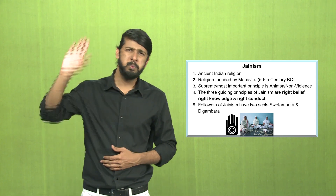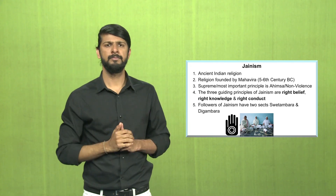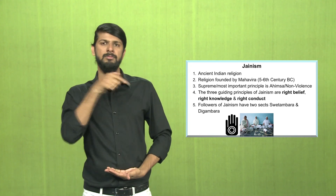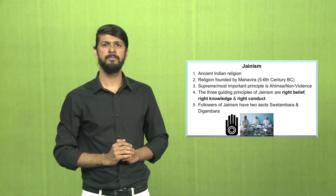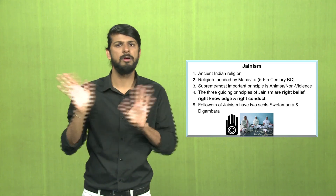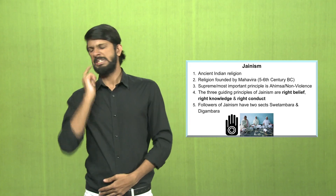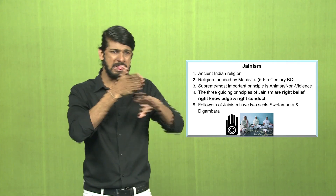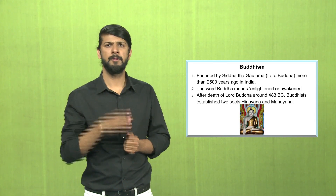Jainism is an ancient Indian religion. It was founded by Mahavira during the 5th to 6th century BC. In Jainism, the most important principle is ahimsa, or non-violence. Violence can be of many types — giving verbal harm or afflicting any kind of pain to animals is also violence. They believe in complete ahimsa. The Jains have three guiding principles.